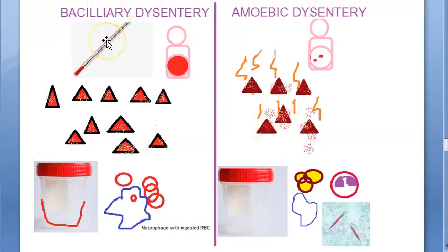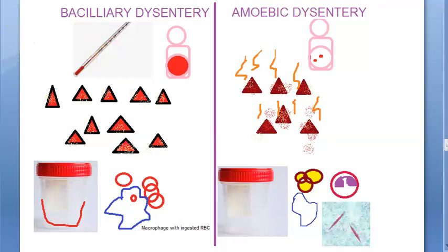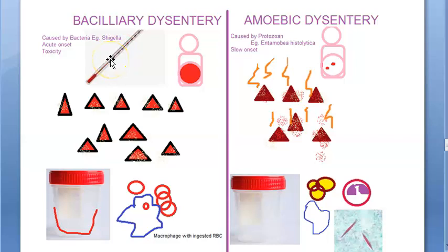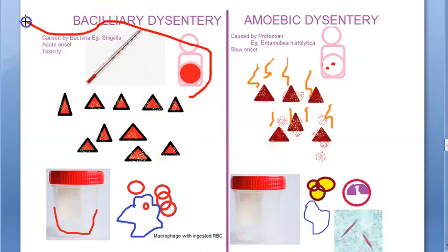Now look at the clinical features. In bacillary dysentery, this person will come with generalized abdominal pain and fever. Bacillary dysentery has an acute onset — suddenly there is pain in the abdomen and fever. This patient will also have some toxicity. So the clinical features of bacillary dysentery are: generalized pain in abdomen, fever, and toxicity, all coming on suddenly.